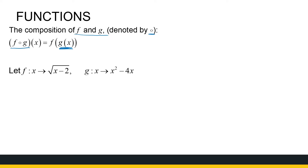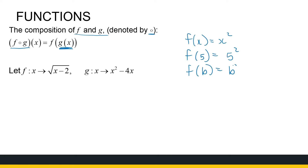Now what does this notation mean? If f of x is the function x squared, then f of 5 means put 5 into the place of x, so it's 5 squared. f of b is just b squared — so whatever's in brackets we put in the place of x. Now f composition g means put the whole function g of x into my function f wherever I see an x.